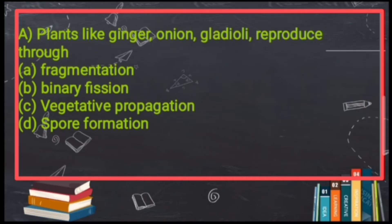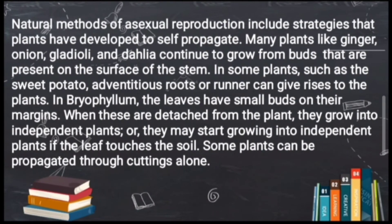You need to remember how ginger, onion, and gladioli reproduce. We have read about four methods of asexual reproduction: fragmentation, binary fission, vegetative propagation, and spore formation. Let's check if the passage gives us related information. When you read the passage about onion, gladioli, and dahlia, focus on what is written: they continue to grow from buds present on the surface of the stem.